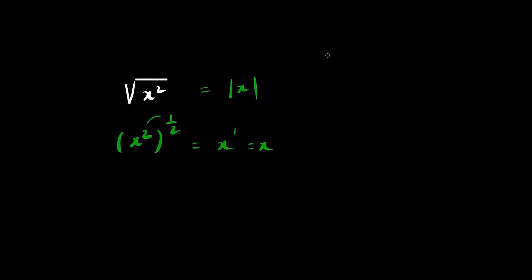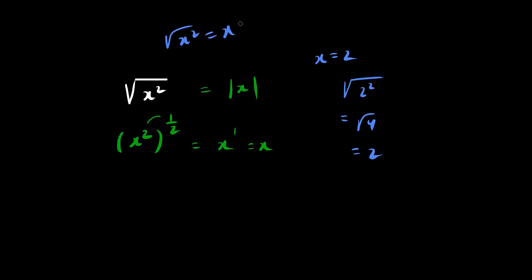Let's give an example. Suppose x equals 2. What is the square root of 2 squared? The answer would be the square root of 4, which is 2. And this makes sense, because if we said incorrectly that the square root of x squared is equal to x — which is kind of right — here we got lucky. Indeed, the right side is 2, and the left side is also 2, because 2 squared is 4 and the square root of 4 is 2.